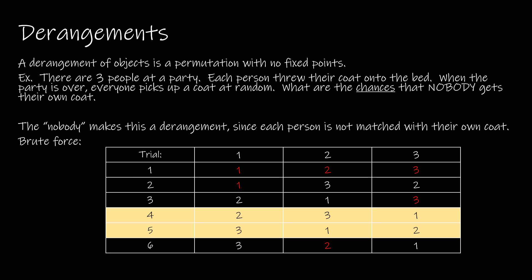When we talk about derangements, we're talking about a permutation with no fixed points, which means nothing ends up where it's supposed to be. Quite often, you'll see people taking their coats or hats to a party, throwing them on the bed, and then randomly picking up a coat when they're done. So when we talk about derangements, we're talking about what happens that nobody gets their own coat.